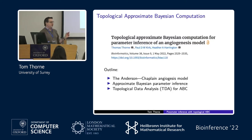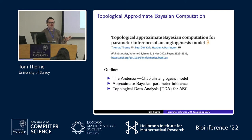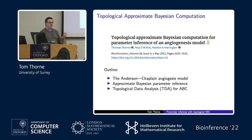This is joint work with my collaborators Paul Kirk and Heather Harrington, and the work I'm going to be talking about is from a paper we published recently in Bioinformatics, where we were looking at using topological features in a model of angiogenesis to perform Bayesian inference. I'll give a quick outline: I'm going to talk about the angiogenesis model very briefly and then introduce ABC.